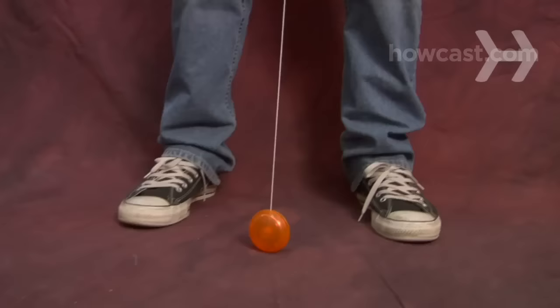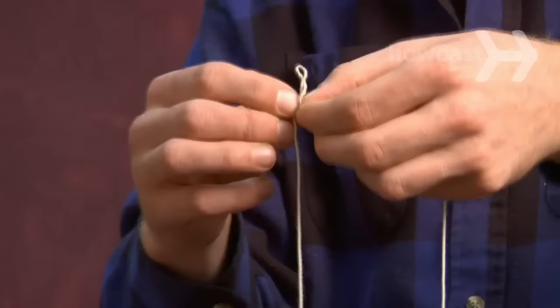Step 1: Unravel the yo-yo so it rests on the floor. The string should reach your belly button. If it's too long, cut it where it meets the bottom of your chest when the yo-yo is resting on the floor.